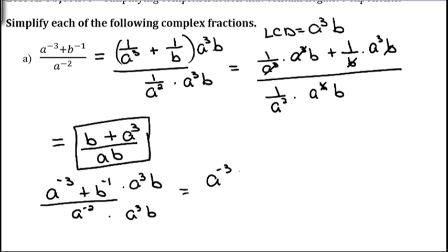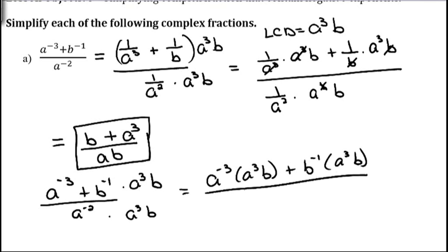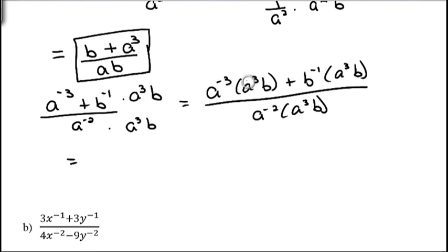So we would have a to the negative third times a cubed b, plus b to the negative first times a cubed b, divided by a to the negative second times a cubed b. When you are multiplying, you add exponents. So a to the negative third times a to the positive third — when we add negative 3 and positive 3, we get 0, and anything to the 0 power is 1, so they basically cancel each other out and we're left with b. Same thing happens here: b to the negative first and b to the positive first cancel, and we're left with a cubed.